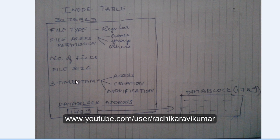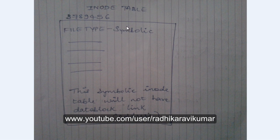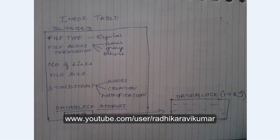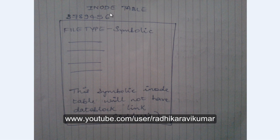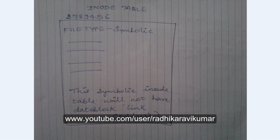In the inode table diagram I showed earlier, this table represents the hard link file. When you look at the symbolic link's inode entry, the file type is listed as 'symbolic', whereas for the hard link it was 'regular'. The same fields exist — file access permissions, number of links, timestamps — but the file type differs. Importantly, the symbolic link's inode table does not have a direct data block link.